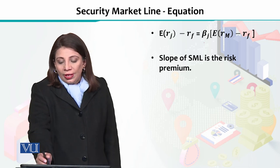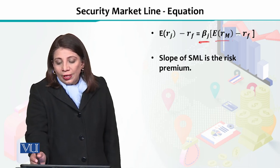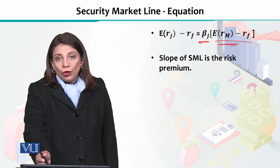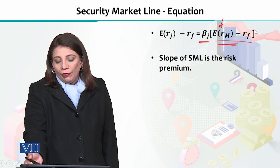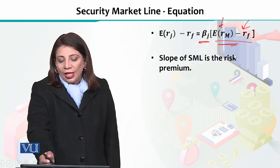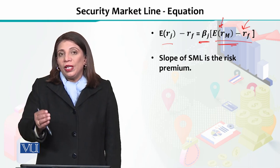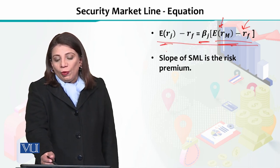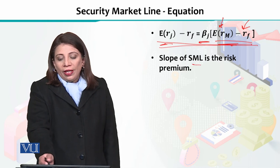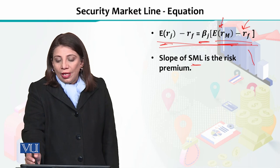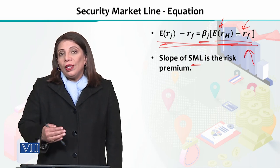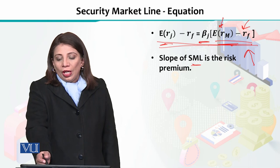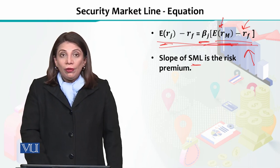If we look at the equation, beta is the measure of risk and the excess market return is the other component. When we take different values from the market — risk-free return and expected return on a certain security — we can estimate this equation. When you plot it, you will get the Security Market Line, which explains the equilibrium in the Capital Asset Pricing Model.